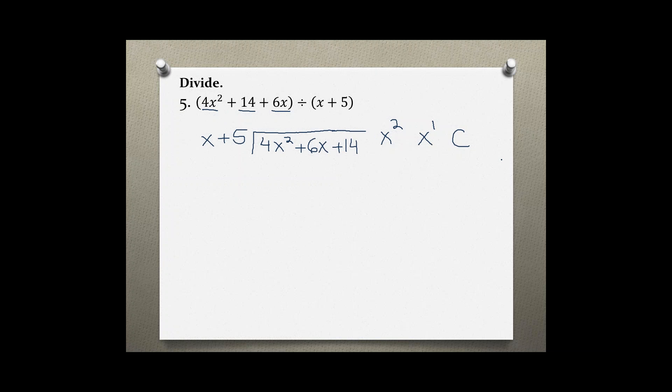Now we can start our division problem. By what do we need to multiply x to get 4x squared? We have to multiply by 4x, because 4x times x gives us 4x squared, and 4x times 5 gives us 20x. We're subtracting, which changes the signs, and we add down to get 4x squared minus 4x squared is 0, and 6x minus 20x is negative 14x.